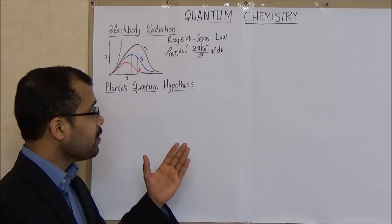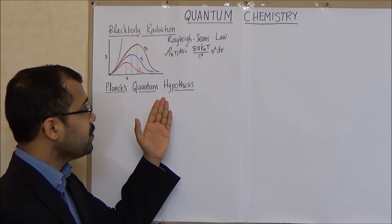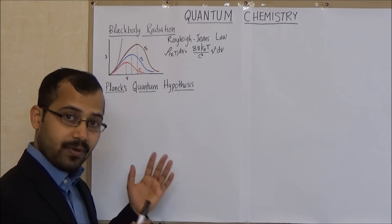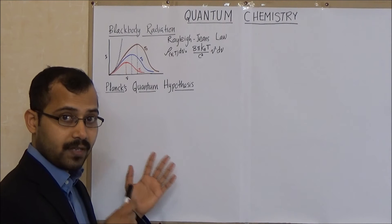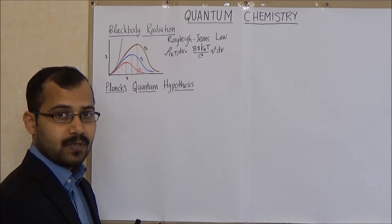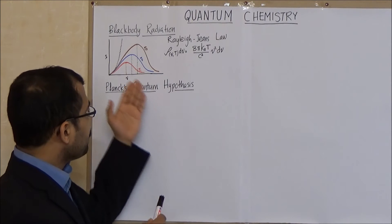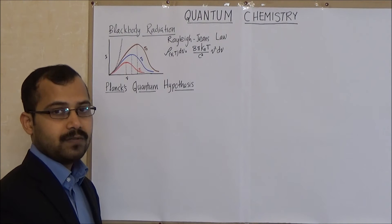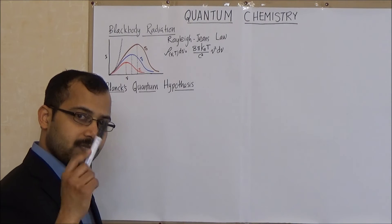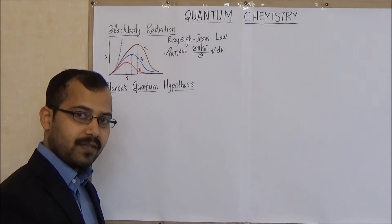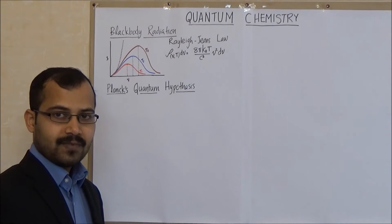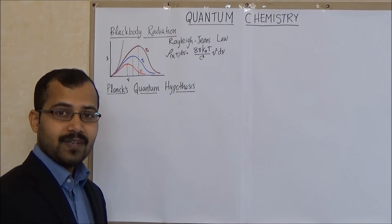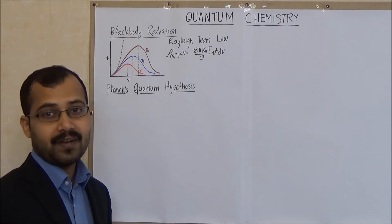The assumptions by Rayleigh and Jeans were true according to the physics known in the 19th century. So there is no mistake in the Rayleigh-Jeans law according to classical physics. But still it was not able to explain black body radiation, so there must be some mistake in the assumptions.